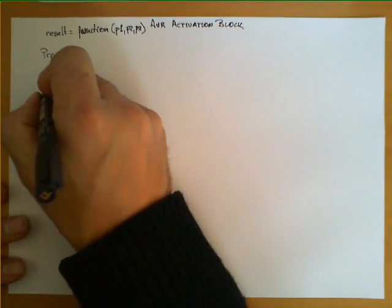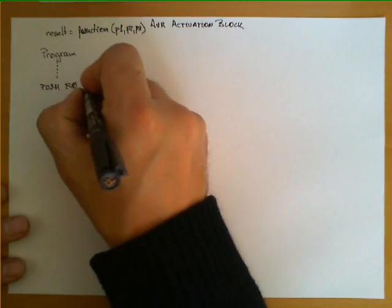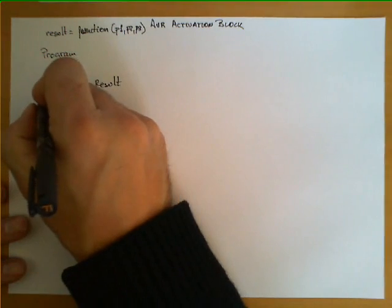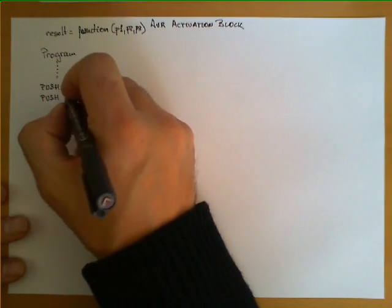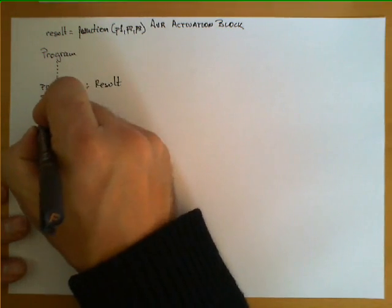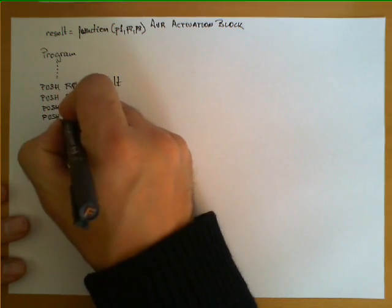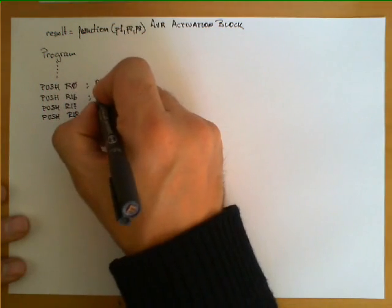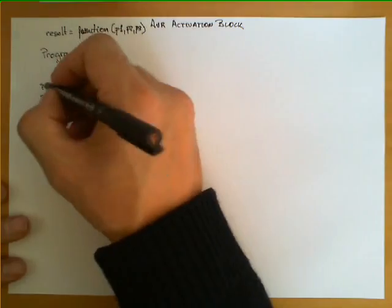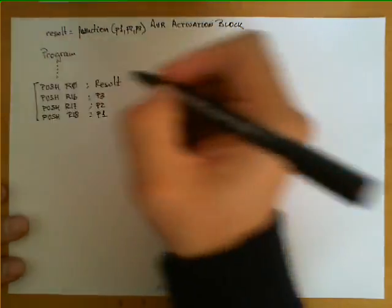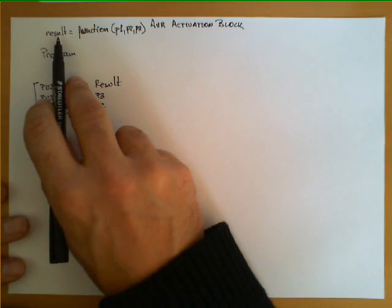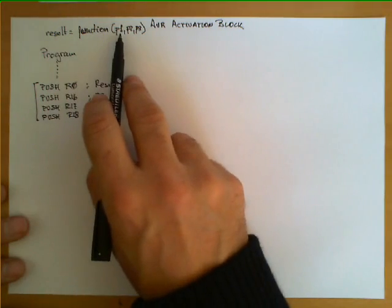We assume that R0 has any value — this is just to reserve a space for the result. The parameters are in R16, R17, and R18, which are respectively P3, P2, and P1. These four instructions are the ones placing or reserving space for the routine to return the result and to access the parameters.